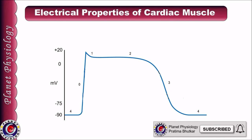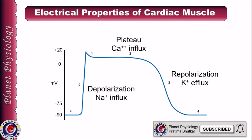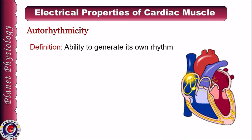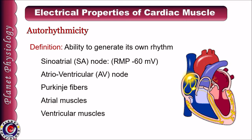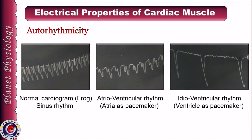To summarize excitability: cardiac muscle shows plateau potential where initial depolarization is caused by sodium influx, the plateau is maintained by calcium and sodium influx through slow calcium channels, and repolarization is brought about by potassium efflux. The next electrical property of cardiac muscle is autorhythmicity, which is actually the combination of two separate properties: automaticity and rhythmicity. Autorhythmicity is defined as the ability to spontaneously generate its own rhythm even in the absence of nerve supply. Almost all parts of cardiac muscle — including the sinoatrial node, atrioventricular node, Purkinje fibers, atrial muscles, and ventricular muscles — possess this property.